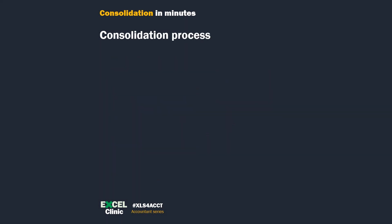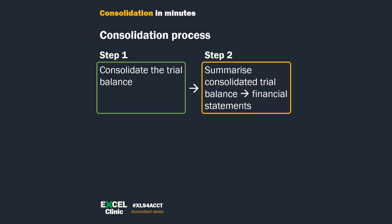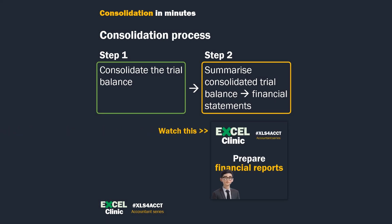The concept I want to sell to you here is this: do the consolidation once for all the accounts. Consolidate the trial balance by group entities. Then with the group consolidated trial balance, summarize it into consolidated financial statements. I will talk about step one in this episode. If you'd like to know how to do step two, please watch my previous video on automating the preparation of financial statements.